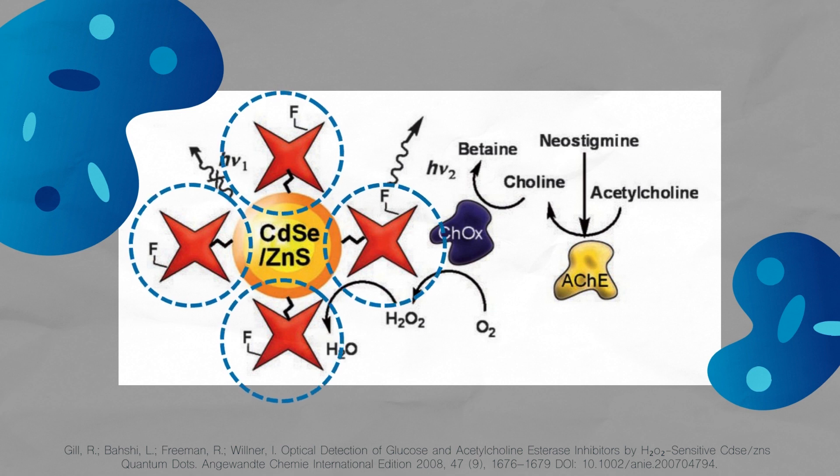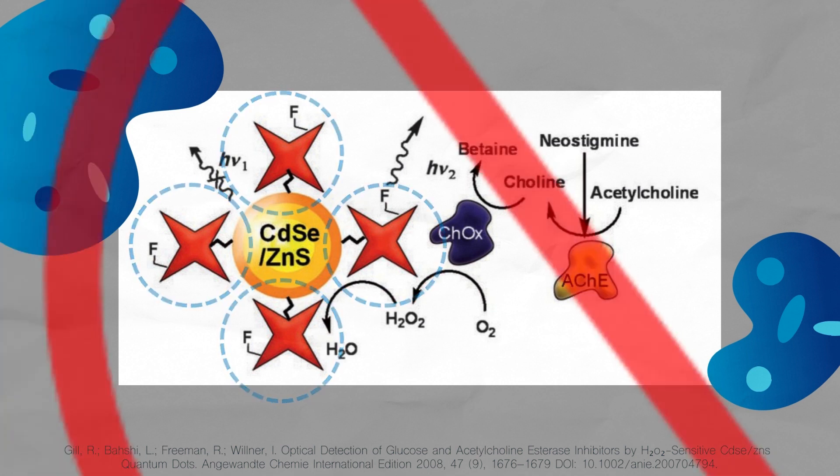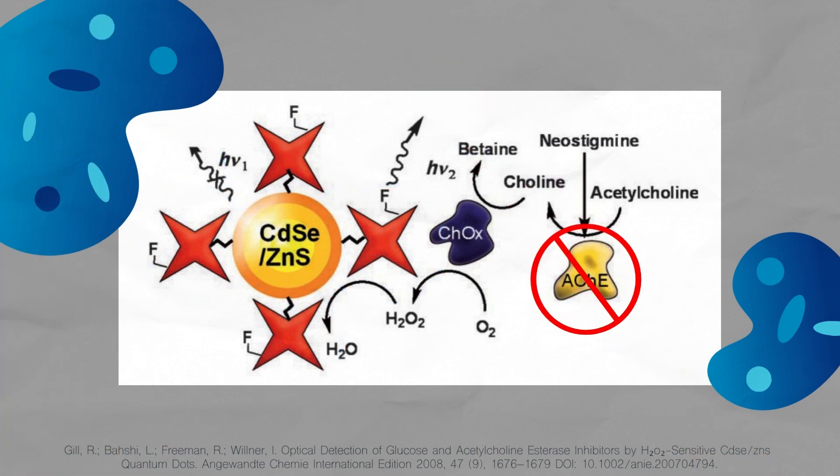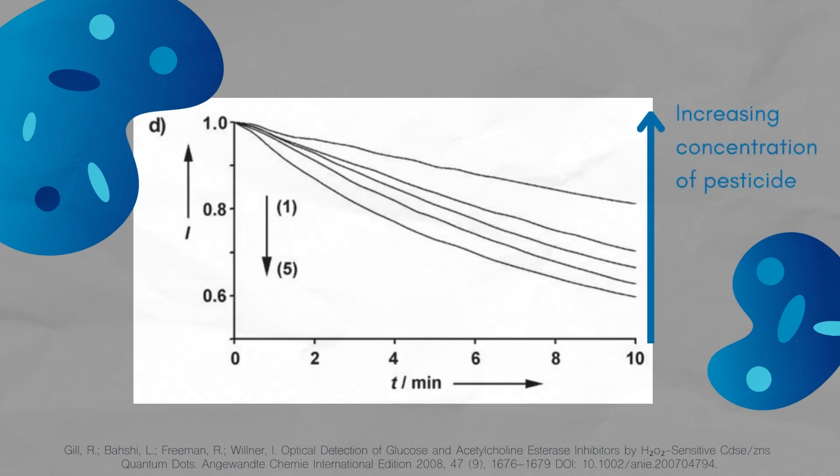In the presence of pesticide, however, AChE becomes inhibited, and hydrogen peroxide concentrations become lower, allowing for the QD to fluoresce brighter. By increasing the concentration of pesticide, we can achieve better fluorescence as shown in the plot. Overall, this allows us to use quantum dots as chemical sensors.